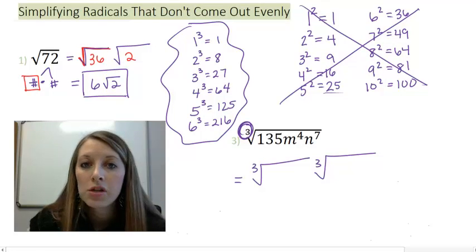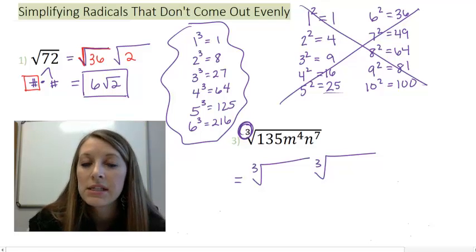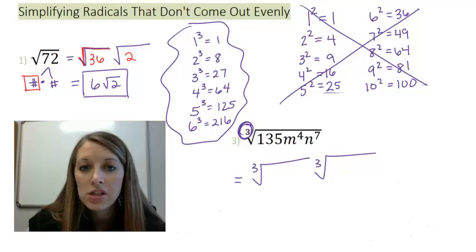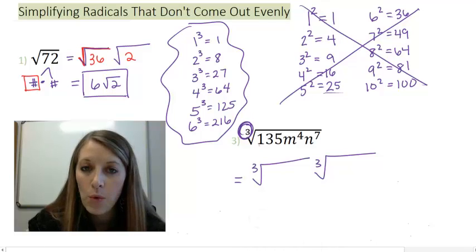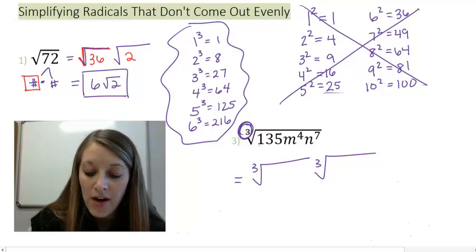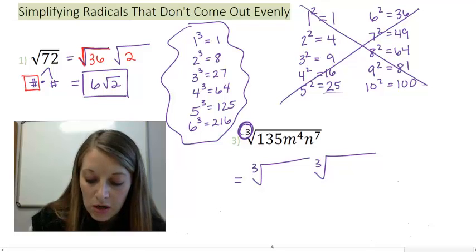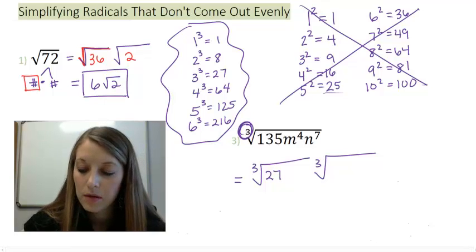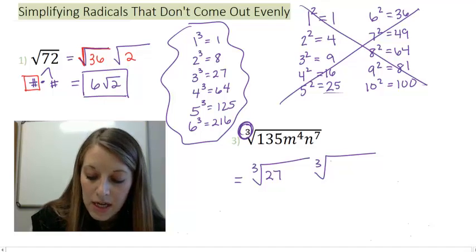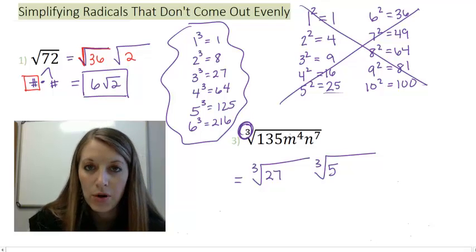Again, the more numbers you have memorized on that list, the easier it's going to make your life. The less you have to plug into your calculator and the more you just recite numbers that you already know. So I notice that 135 is not on this list. But what I want to do is try and divide 135 by the largest number. And the largest one that goes in here evenly from my cube list is 27. Because 27 times 5 gives me 135.